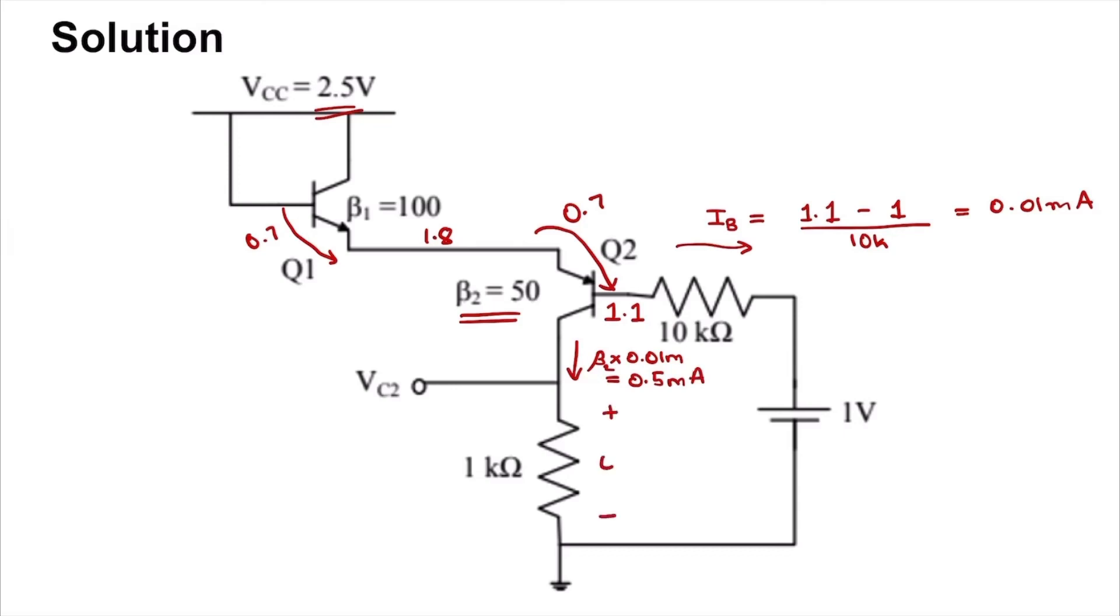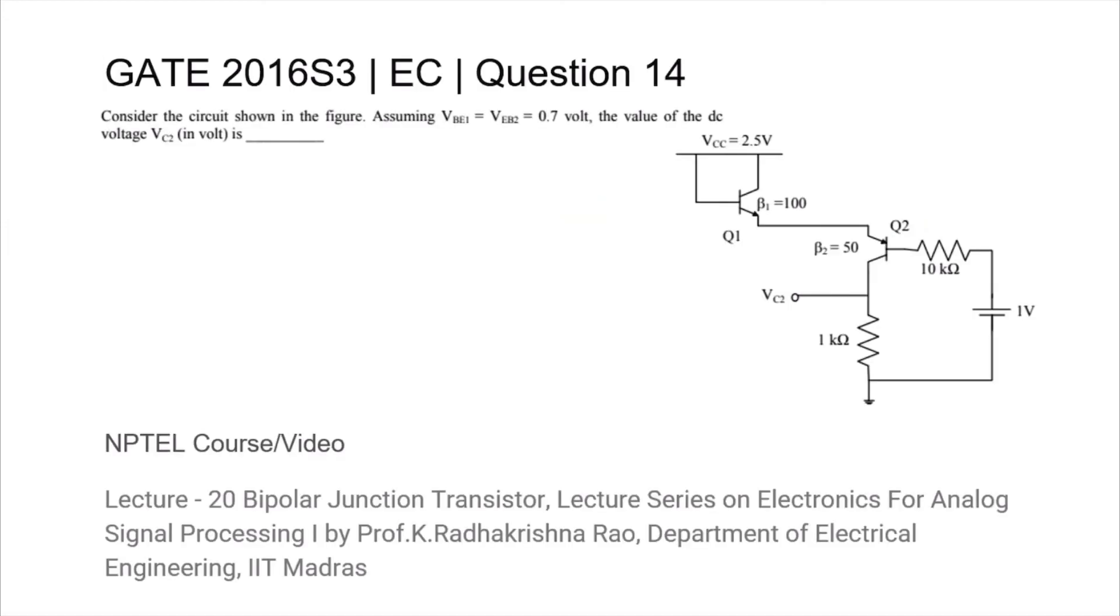And so the voltage across this resistor is 0.5 milliamps into 1 kilo ohm, which is 0.5 volts. So VC2 we get is 0.5 volts. The answer in volts is 0.5.